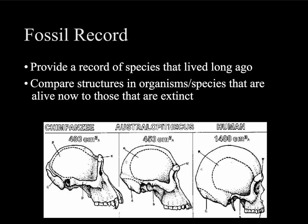The first evidence for evolution, which is probably the one you think of right away, is the fossil record. The fossil record allows scientists to compare organisms that are alive today to organisms that lived thousands and millions of years ago. By comparing the structures in these organisms, we can see how changes have happened. It's pretty amazing what scientists have learned from looking at fossils, but we have an even more powerful tool now, which we'll get to in a couple of minutes.